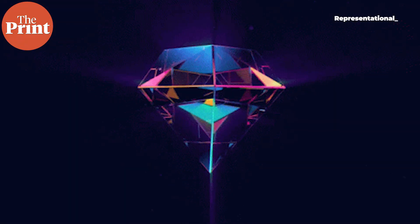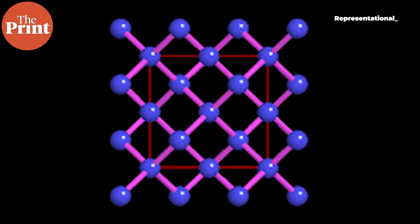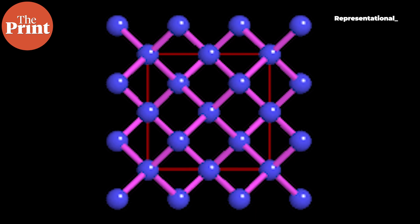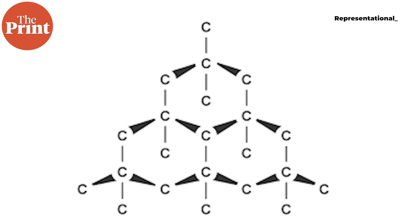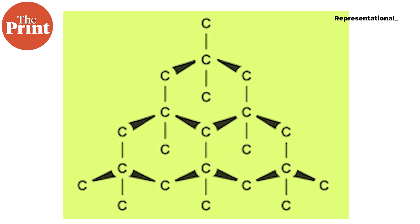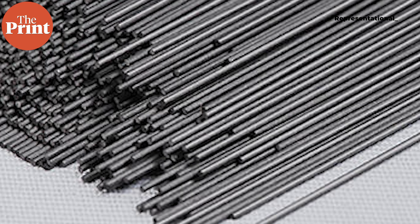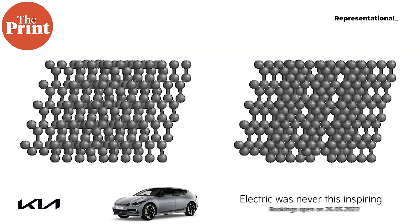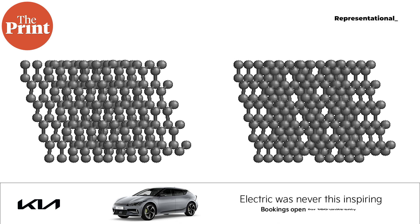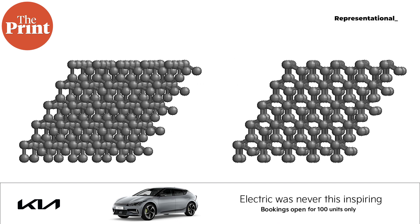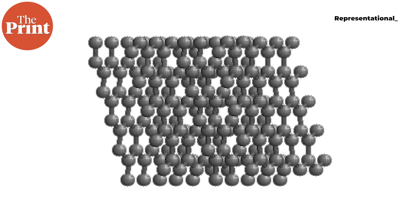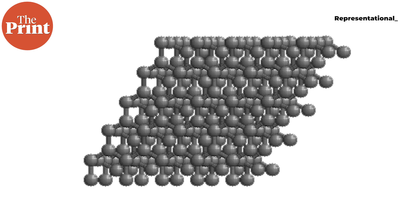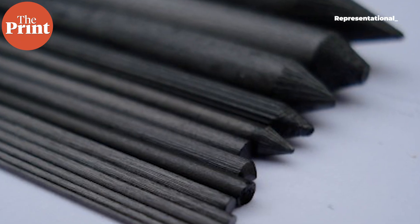Diamond is the hardest known natural substance on Earth. This image shows how carbon atoms are arranged in a diamond — the atoms are arranged in a tetrahedral structure, which lends diamond its hardness. Graphite, on the other hand, which is used in pencils, is composed of carbon atoms arranged in hexagons, which are then stacked in layers or sheets. Because these sheets, known as graphene, are bound by weak forces, they slide off easily, making them ideal for pencils.